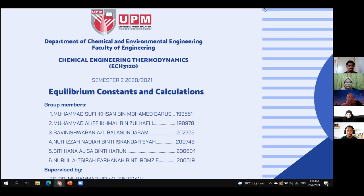These equilibrium constants are divided into three parts: equilibrium constant for gas phase reaction, equilibrium constant for liquid phase or solid phase reaction, and lastly equilibrium constant for heterogeneous reaction. Alif will explain the first part, which is equilibrium constant for gas phase reaction.